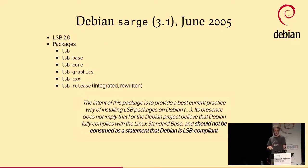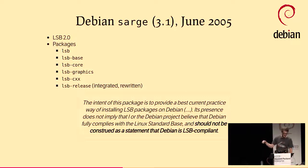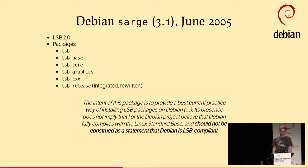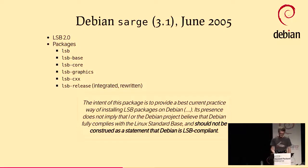Then in Sarge after a very long freeze — June 2005 — we had LSB 2.0, and LSB release was reintegrated into the LSB source package. We had LSB, LSB base, core, graphics, and CXX. And it was the first appearance of that longer message saying the intent of this package is to provide a best current practice way of installing LSB packages on Debian. Its presence does not imply that Debian fully complies with the LSB, and it should not be construed as a statement that Debian is LSB compliant.